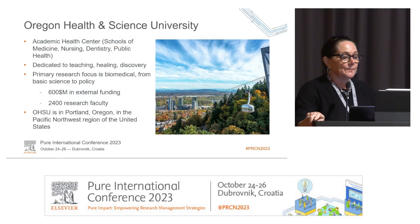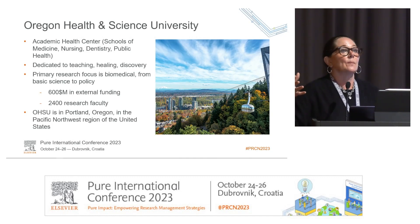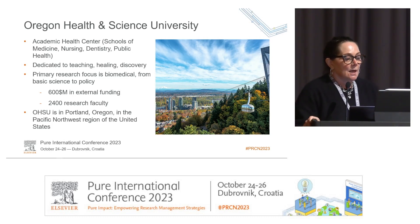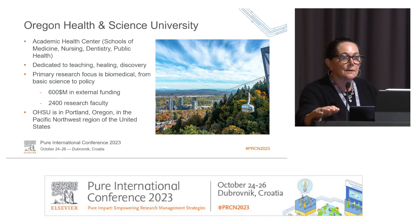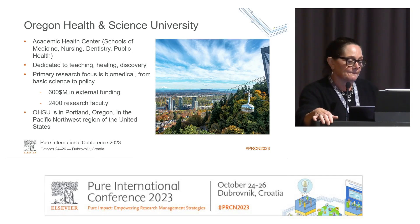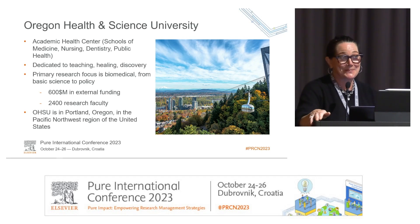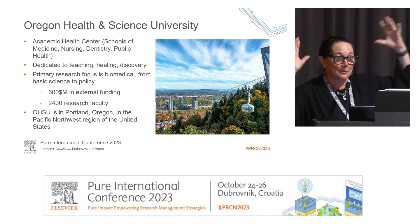I want to give you a little bit of background about Oregon Health and Science University. We are an academic health center, basically focusing on biomedical research of various kinds. We have schools of public health, nursing, dentistry, and medicine, and a college of pharmacy. Our mission is teaching, healing, and discovery. Our primary focus is biomedical, from very basic science up to the policy level. We had about $600 million U.S. dollars in external funding last year, and we have about 2,400 research faculty. We have very few undergraduate programs — mostly PhD, MD, and professional programs. We are located in Portland, Oregon, in the Pacific Northwest region of the United States. We even have a tram, like Dubrovnik.